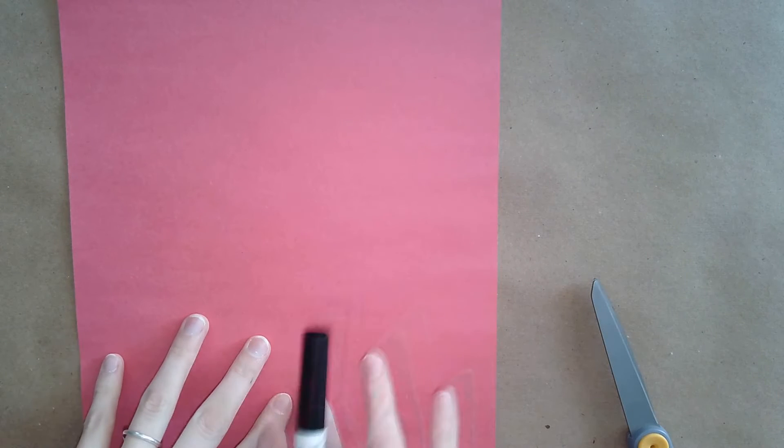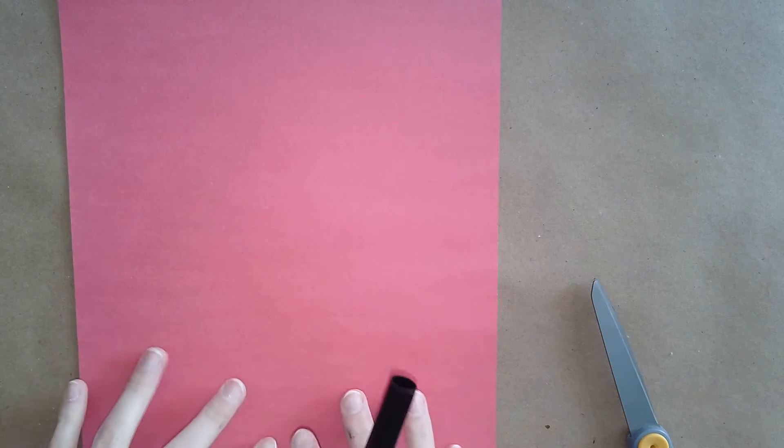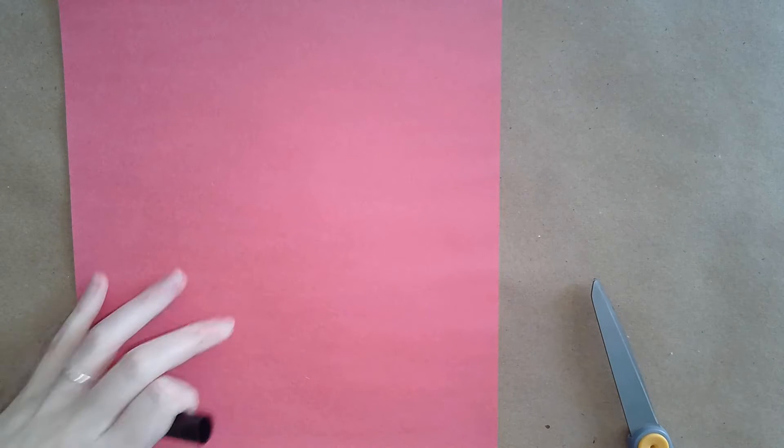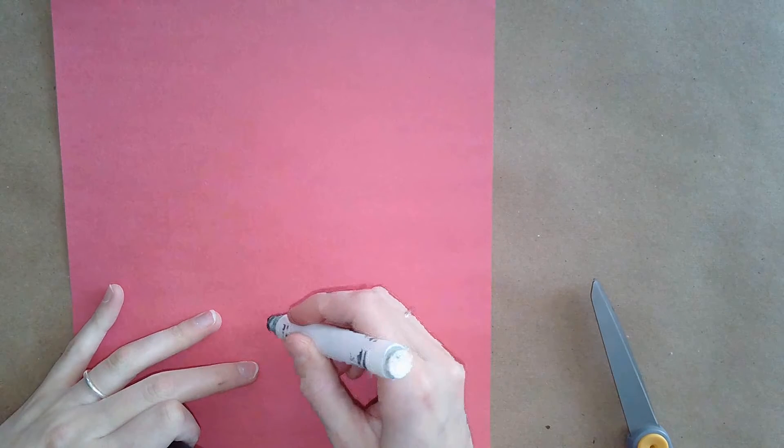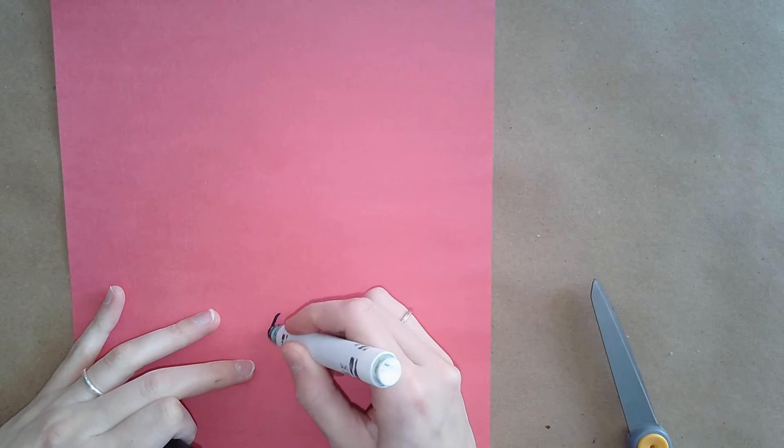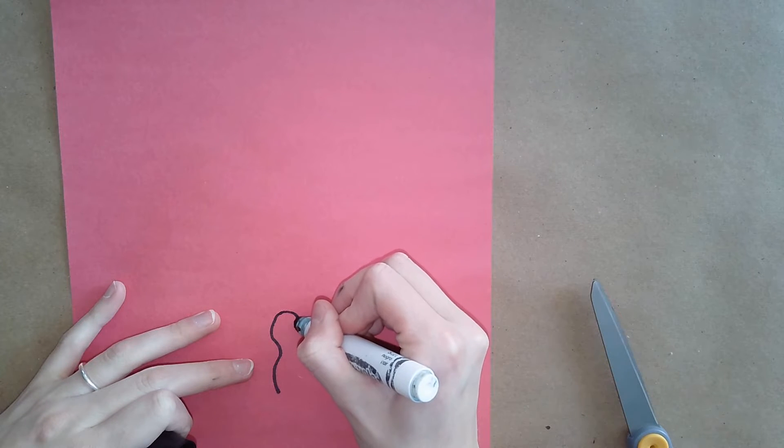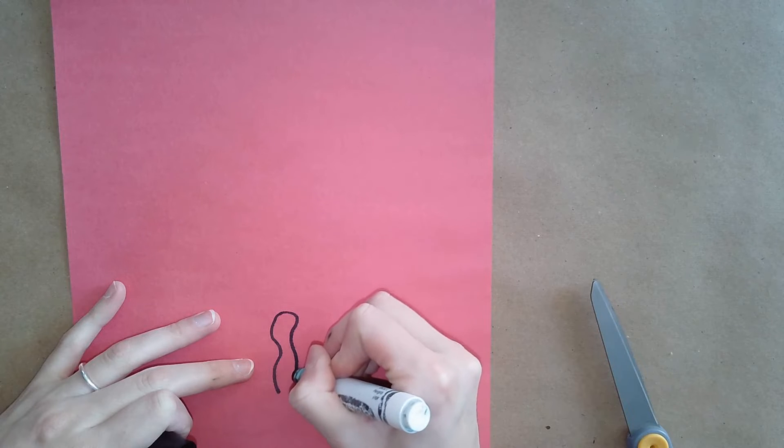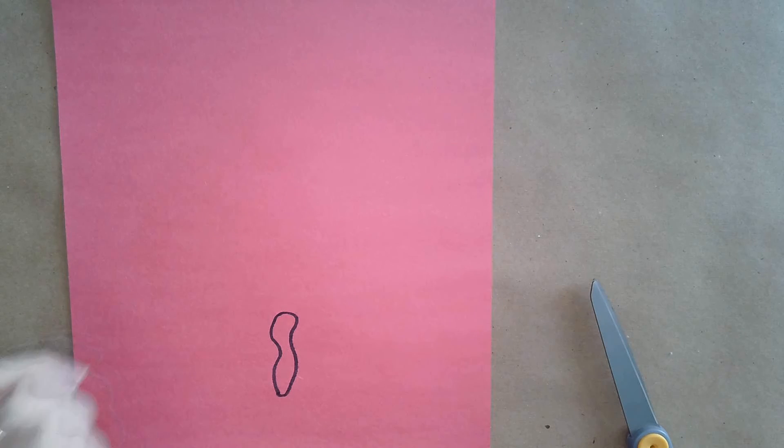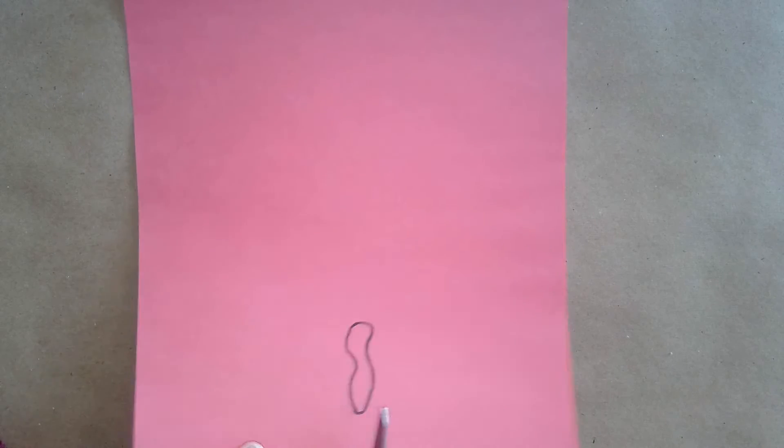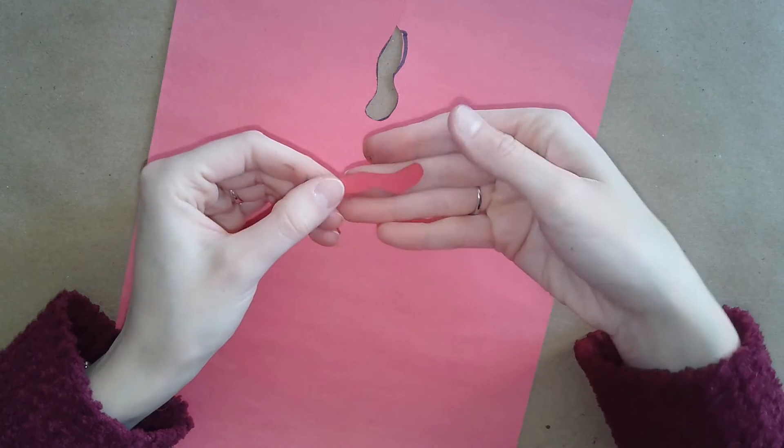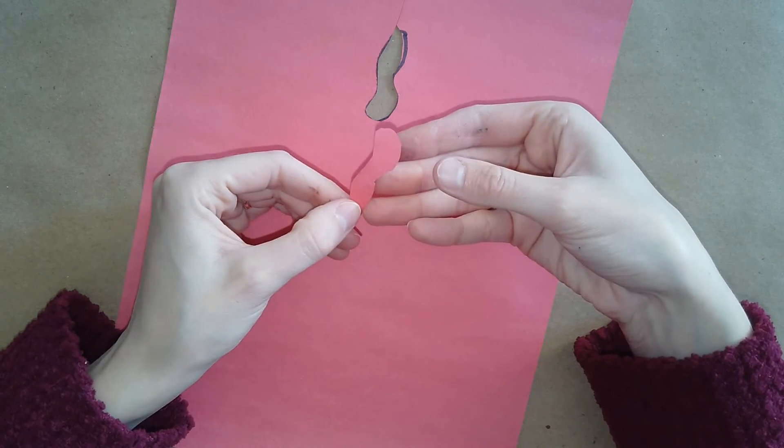And the last thing you'll want to draw and cut out is the turkey's gobbler. So you'll need the red construction paper. I'll just draw kind of a squiggle and then draw around it. Something like this. And then you can cut this out. So you'll end up with a shape kind of like this.